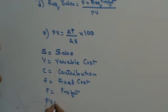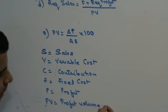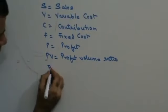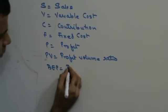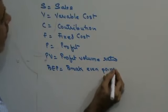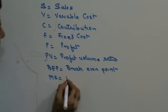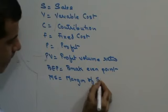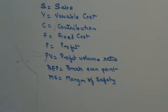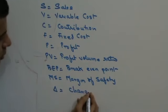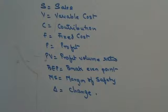PV stands for profit volume ratio. VEP stands for break even point. MS stands for margin of safety. Delta stands for change. So these are the meanings of the symbols that we have done in the formula.